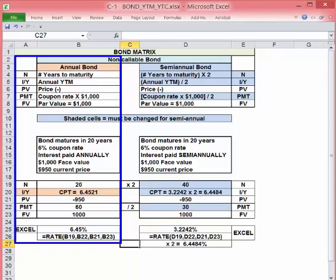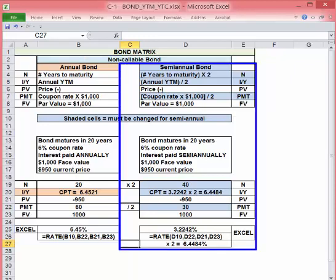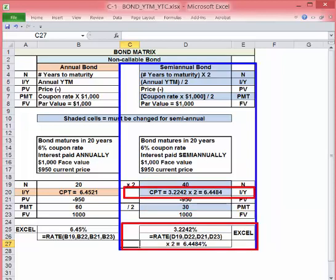Making this a semi-annual bond requires three changes. N is the 20 years times two, so it's 40. Payment is the 6% times $1,000 divided by two, so it is now $30. We solve for IY, but we have to double the result to find the yield to maturity.